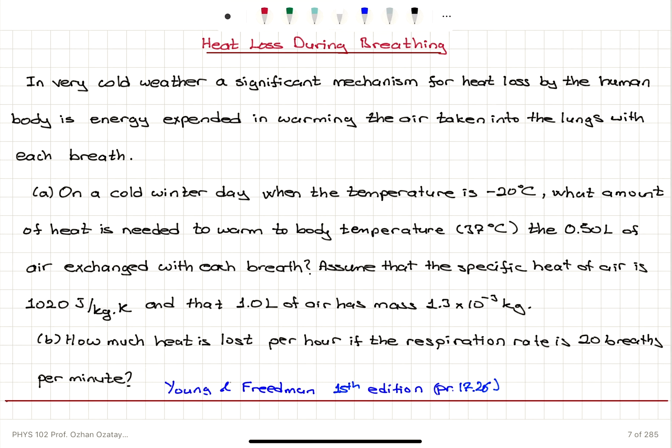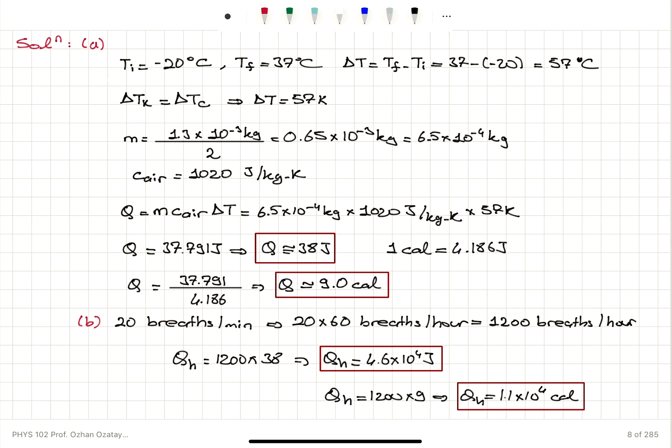So this problem is about heat loss during breathing in very cold weather on a cold winter day where the temperature is minus 20 degrees Celsius. To warm up 0.5 liters of air intake in each breath to 37 degrees, how much heat do we need to expand? We know the specific heat of air and the mass of 1 liter of air. We want to know how much heat is lost per hour if the respiration rate is 20 breaths per minute. First we calculated the temperature change, then the mass of 0.5 liters of air by dividing the mass of 1 liter by 2. Q equals MC delta T because we don't have any phase change. This gives us the answer in joules. One calorie is 4.186 joules, so we can convert to calories.